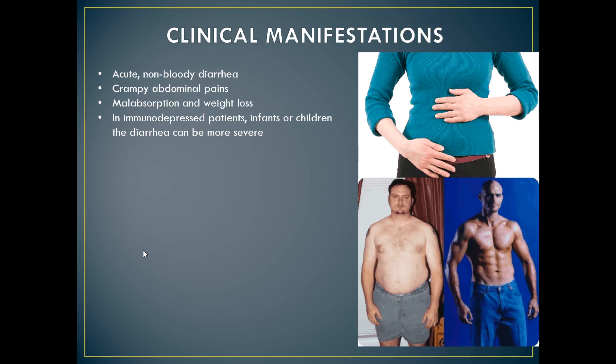Cystoisospora or Isospora infections usually result in acute non-bloody diarrhea with crampy abdominal pain, which can last for weeks and results in malabsorption and weight loss. In immunodepressed patients such as those with AIDS or undergoing chemotherapy, and in infants and younger children, the diarrhea can be severe. Eosinophilia may also be present, which is defined as an increase in peripheral blood eosinophilic leukocytes to more than 600 cells per microlitre of blood.